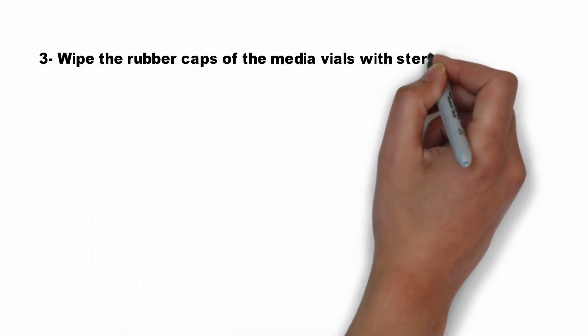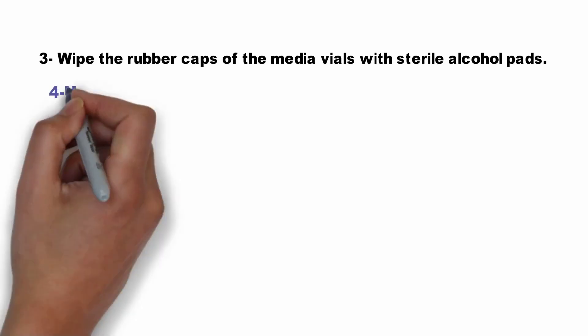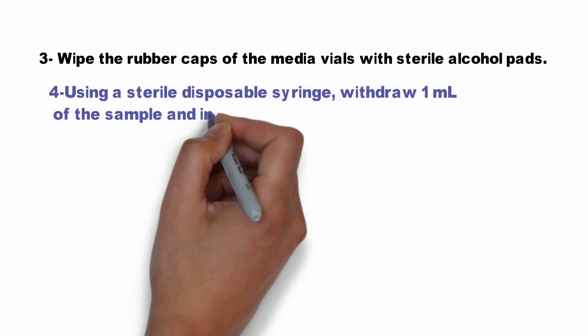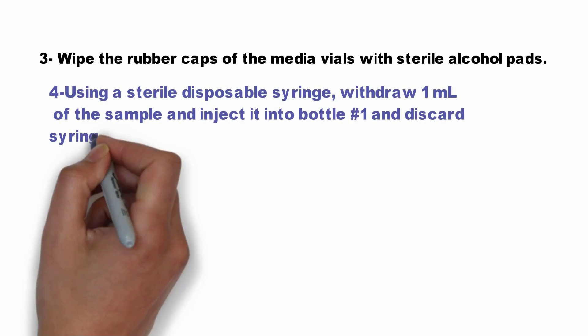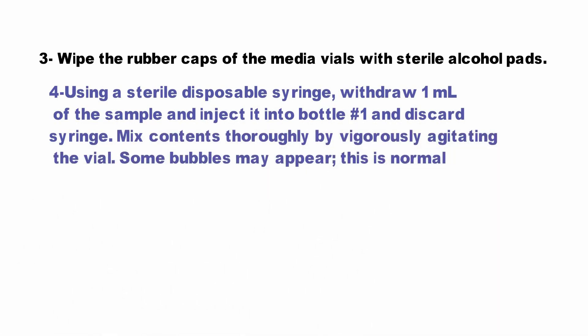Wipe the rubber caps of the media vials with sterile alcohol pads. Using a sterile disposable syringe, withdraw 1 ml of the sample and inject it into bottle number one, then discard the syringe. Mix the contents thoroughly by vigorously shaking the vial.